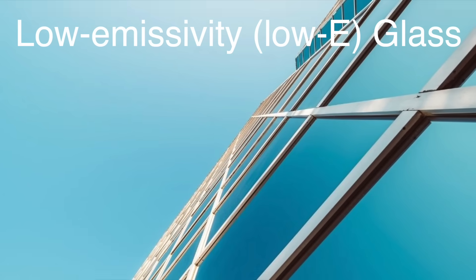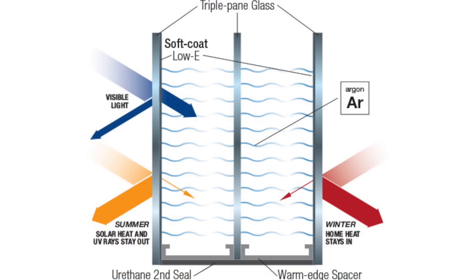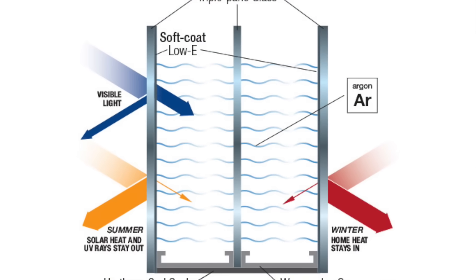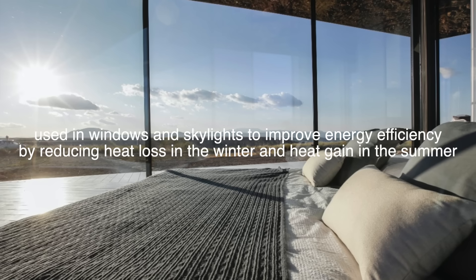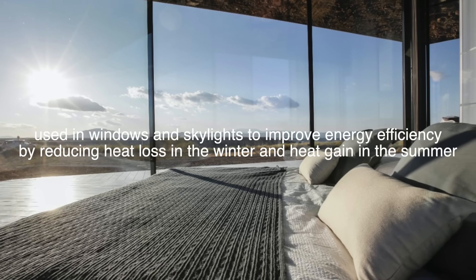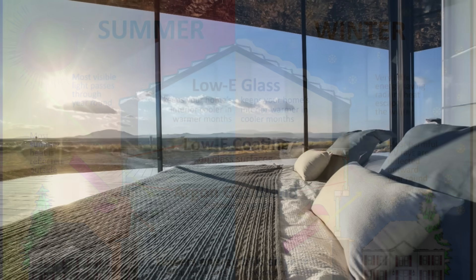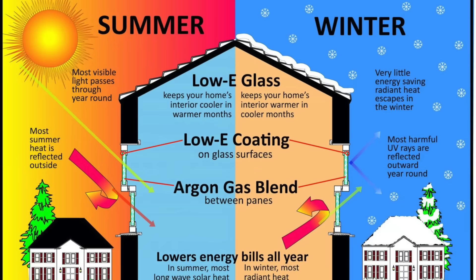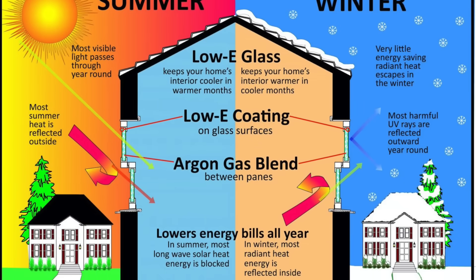There is also low-emissivity, or low-E glass, which has a special coating that reflects infrared light while allowing visible light to pass through. It is used in windows and skylights to improve energy efficiency by reducing heat loss in the winter and heat gain in the summer. The low-E coating can also help reduce glare and protect furniture and flooring from fading due to UV exposure.